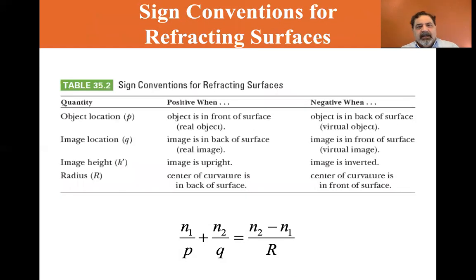Okay. And then we have a similar table for refracting surfaces: object location P, image location, and image height and radius. These are all positive when the object is in front of the surface, it's a real object. Images in back of the surface, it's a real image. Image is upright. In the center of curvature is in the back of the surface. So those are all of these quantities would be positive.